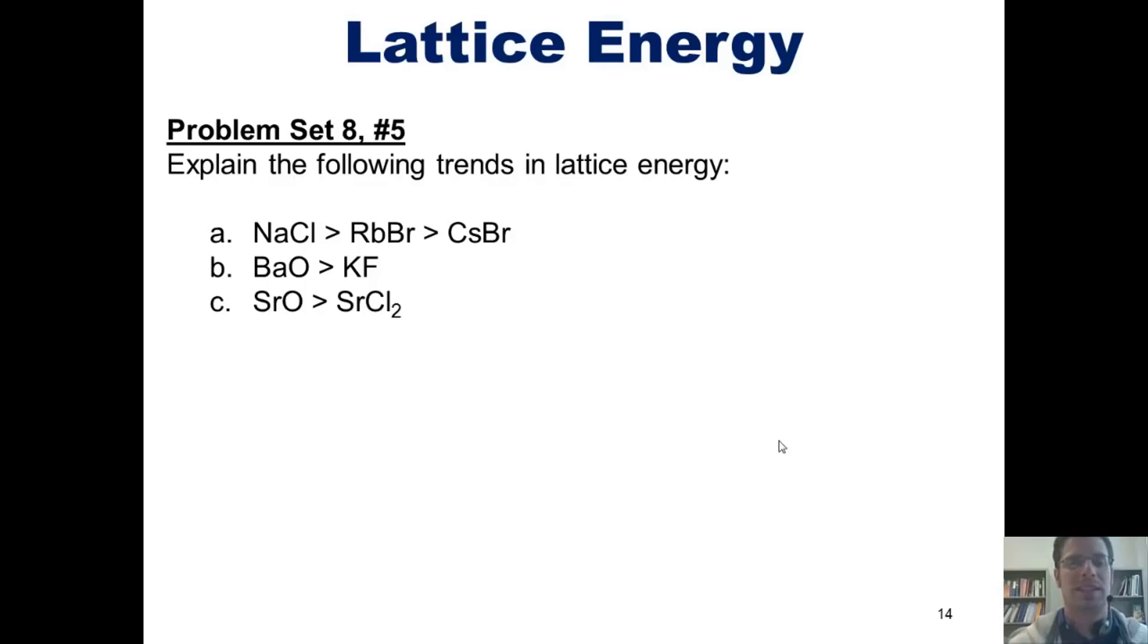Explain the following trends in lattice energy. In part A, we can see that sodium chloride has a stronger lattice energy than rubidium bromide, which has a stronger lattice energy than cesium bromide. Why is that the case?